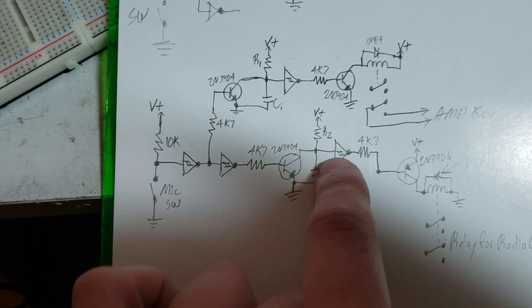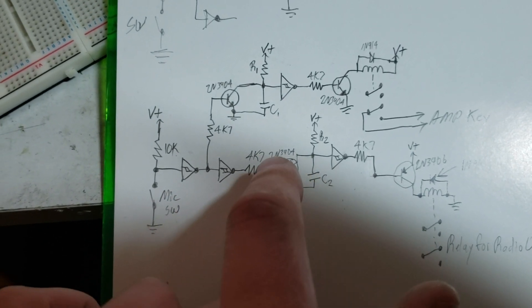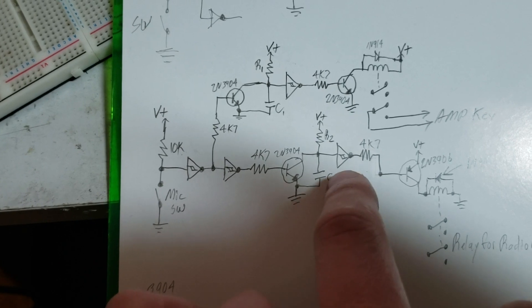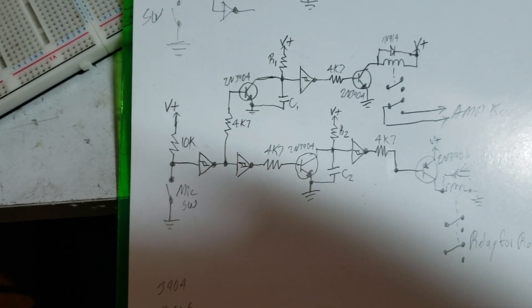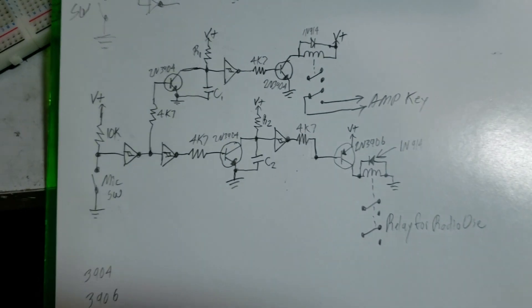So that's the gist of it. As soon as you unkey this, the radio immediately turns off because this transistor immediately pulls that capacitor to ground very, very quickly. So that's the basics of it.